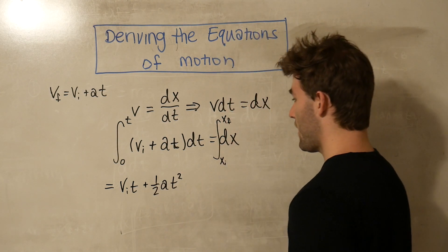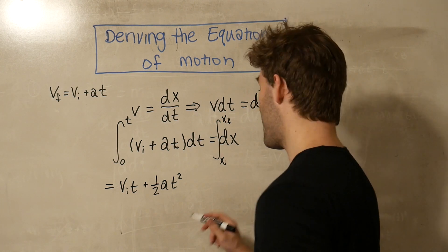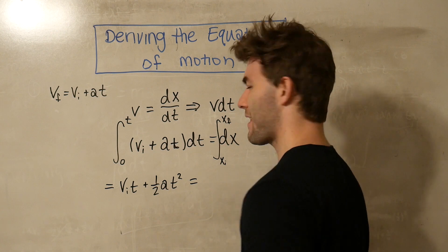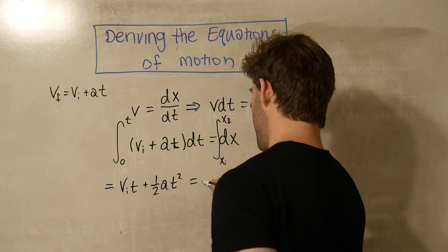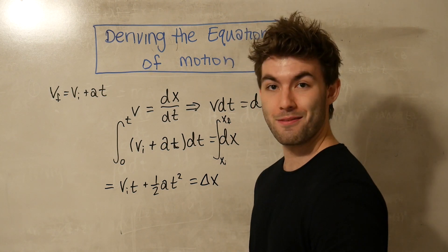And then the integral of dx from xi to xf is just going to be xf minus xi. And that's just the same thing as delta x. And there we have the second equation of motion.